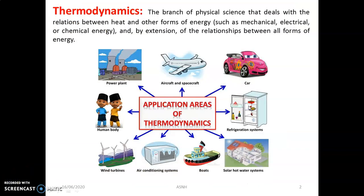Let us start with the definition of thermodynamics. The word thermodynamics is divided into two parts: thermo and dynamics. Thermo means heat and dynamics means motion. So the study of heat in motion is the term thermodynamics. The definition of thermodynamics is the branch of physical science that deals with the relationship between heat and other forms of energy — mechanical, electrical, or chemical — and their conversion between one another.